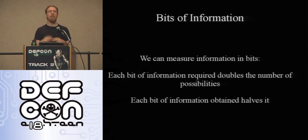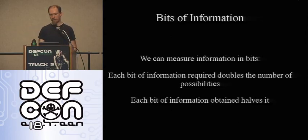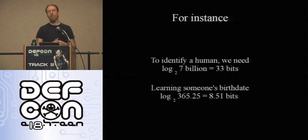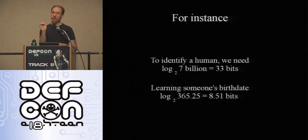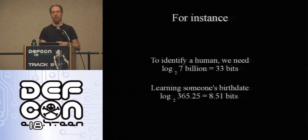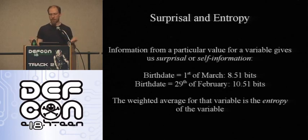There's a mathematical measure you can use to say how identifying a set of facts about a person is, or how much information is required to identify someone. Each bit doubles the number of possibilities you need, and each fact you learn halves them — so they trade off against one another. With seven billion people you need about 33 bits to identify one person. If you learn someone's birth date — what day of the year they were born on — you learn about 8.51 bits.